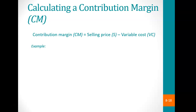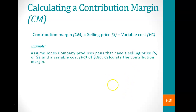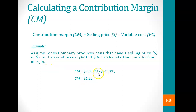Next, we'll talk about what's known as contribution margin. Contribution margin is the selling price of an item minus its variable cost. For example, the Jones Company produces pins with a selling price of $2 and a variable cost of $0.80. Subtracting the variable cost from the sales price gives a contribution margin of $1.20 per pin sold.